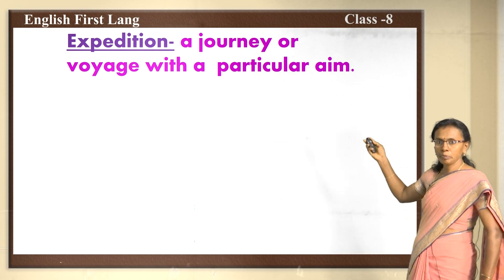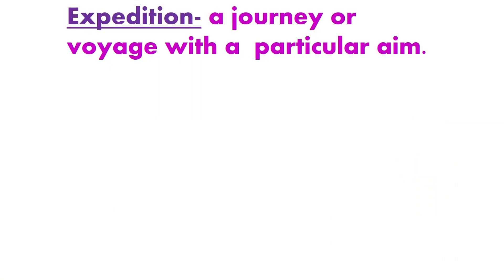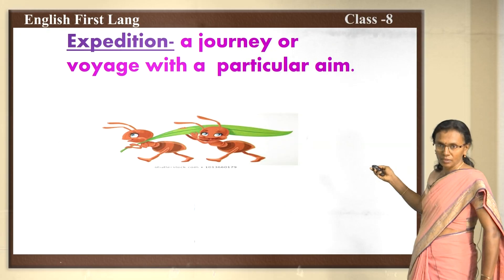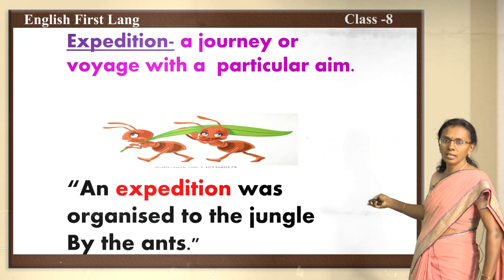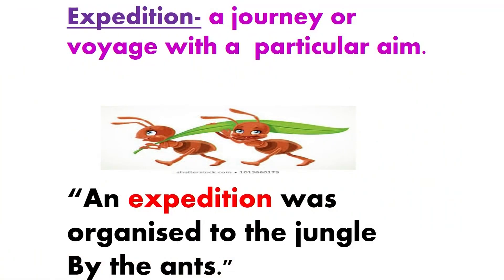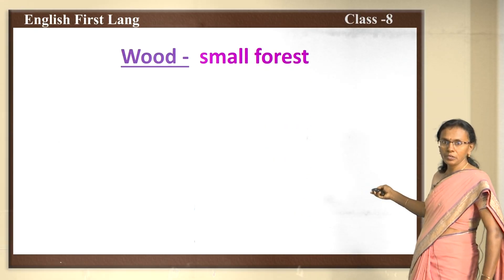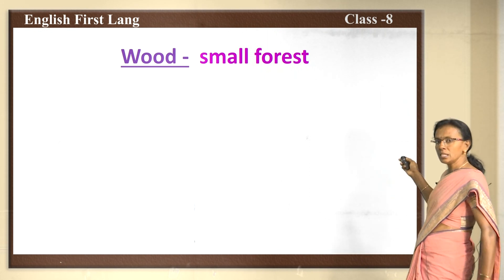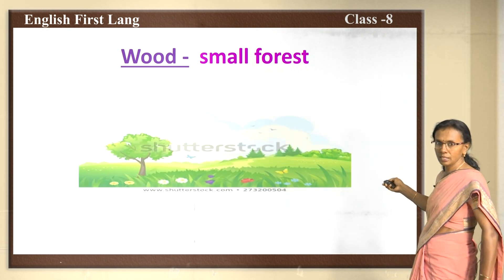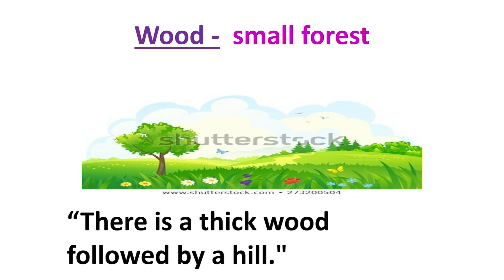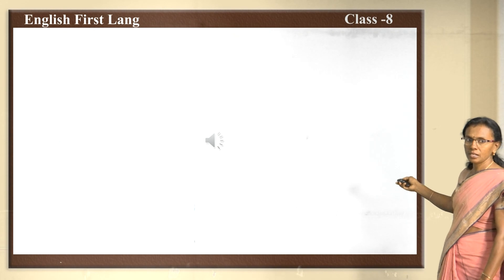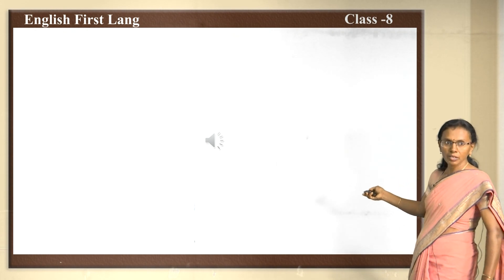Next word is 'expedition' — a journey or a voyage with a particular aim. An expedition was organized to the jungle by the ants. Next word is 'wood' — wood refers to a small forest. For example: there is a thick wood followed by a hill. You have understood, I suppose.